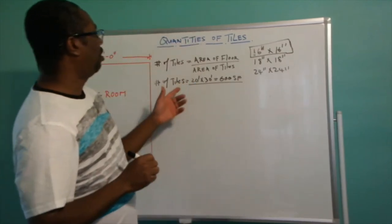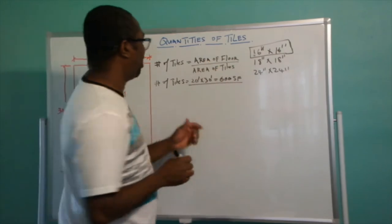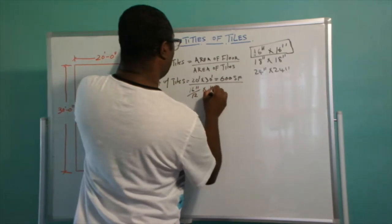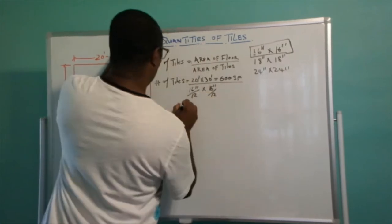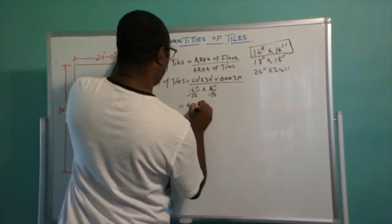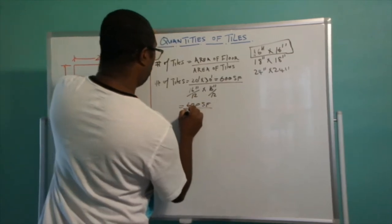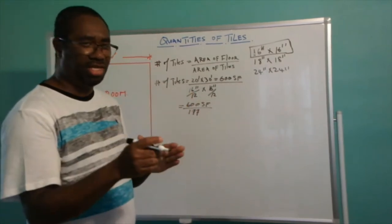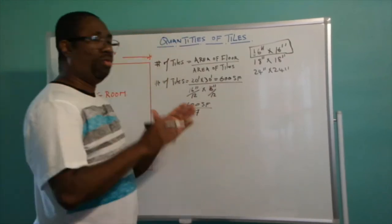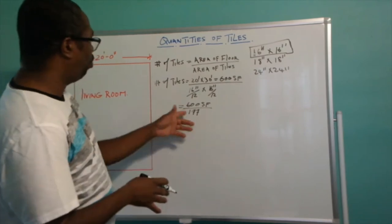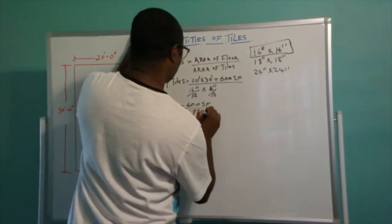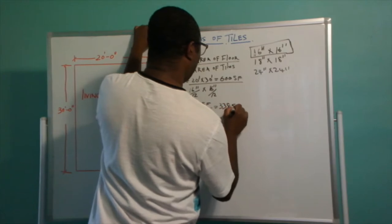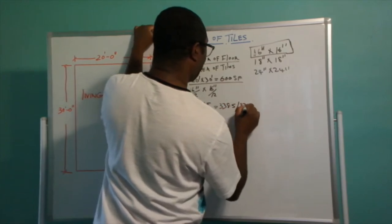We are going to use 16 inches tiles, so we divide 16 inches by 12 to convert to feet, which is 1.33 feet. And 1.33 feet times 1.33 feet is 1.77 square feet. So dividing 600 square feet by 1.77 square feet works out to be 338.5, which you round up to 339 tiles.